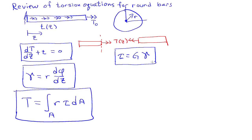It's also convenient to write these as a single equation, which would be a second-order ordinary differential equation in terms of the rotation field phi. And the way we get to that is simply by substituting one relationship into another. So if I substitute here relation 1 into relation 2, I'll find that tau is equal to gr d phi dz.